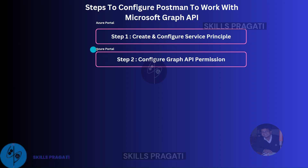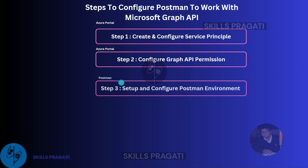Next, in step 3, we will set up and configure the Postman environment. This step involves setting up a Postman environment to store and manage environment variables. Environment variables can be used to store sensitive information, such as your client ID and client secret, which can then be referenced in your requests.